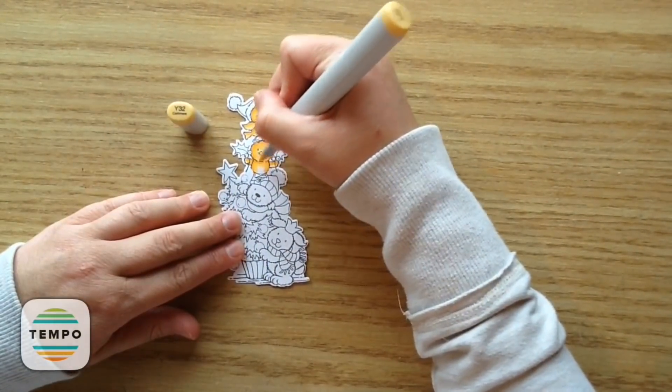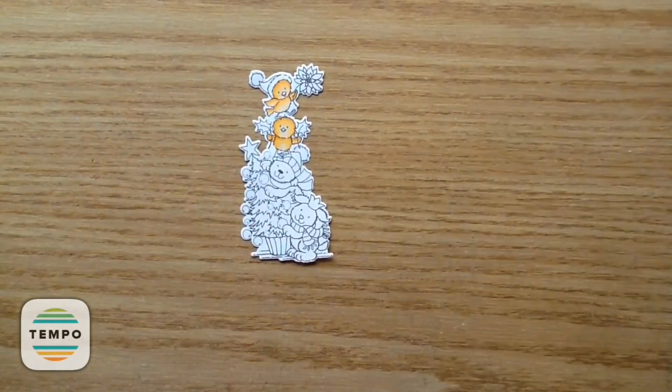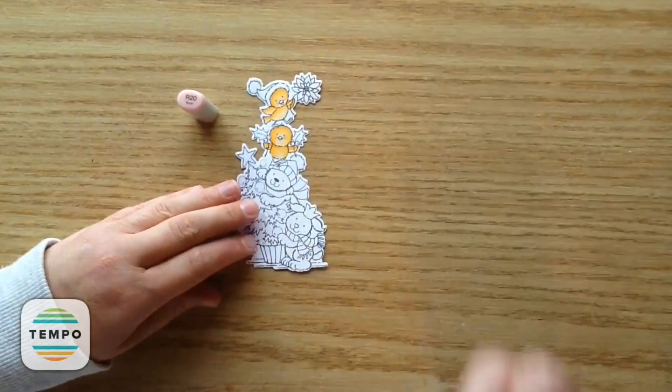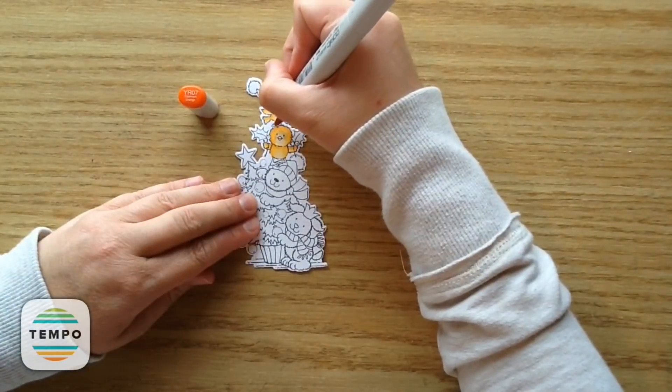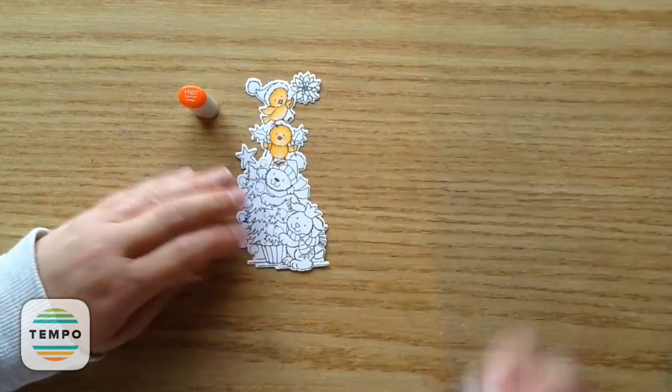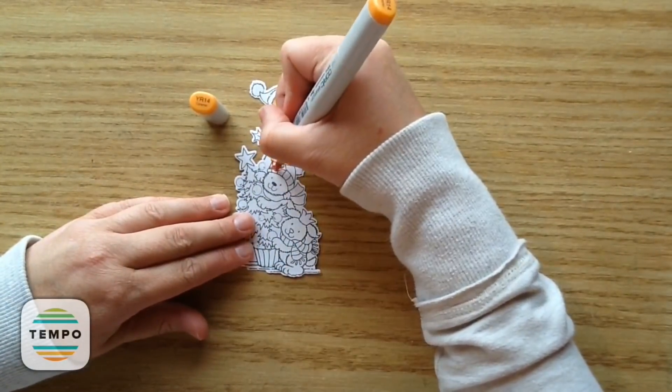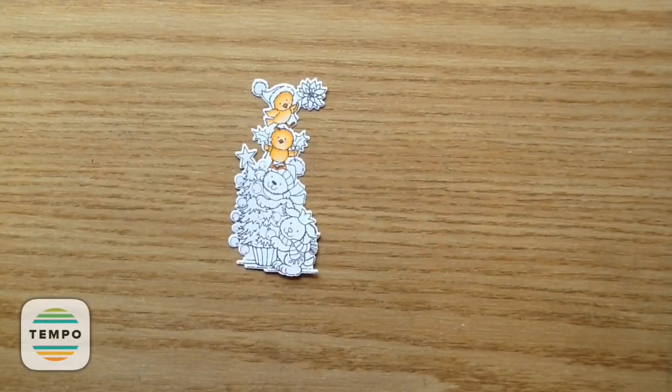And this is such a cute image because you can color it up so many different ways. You can use traditional Christmas colors or you could use some cute pastels or some bright colors. Or like I did, I kind of went for like a rustic, kind of like woodsy feel for it. And then for the noses, I used Y07 and YR14 for the little feet and the little beaks.